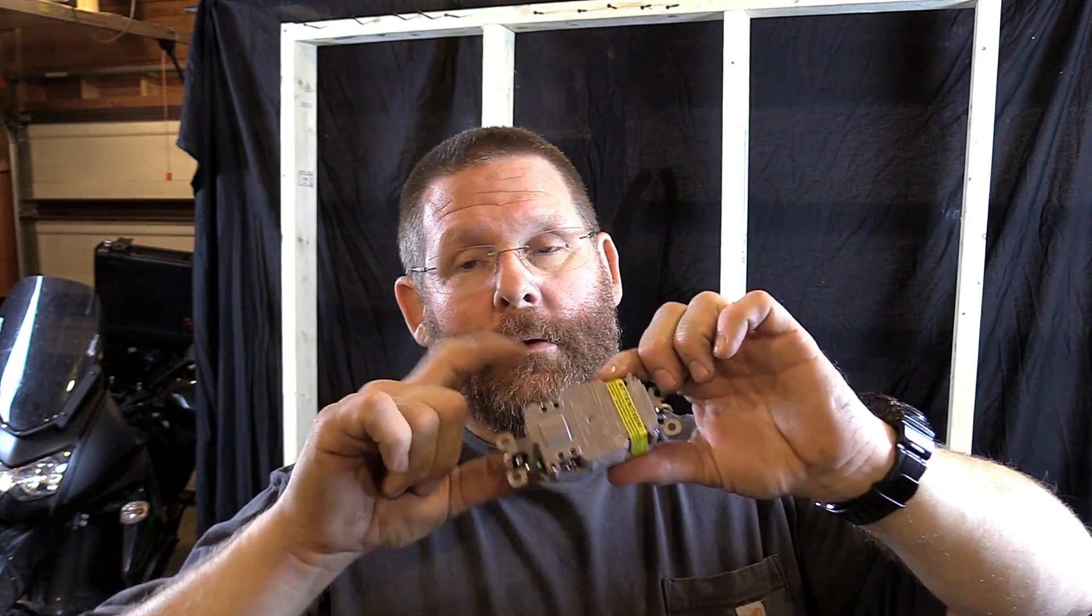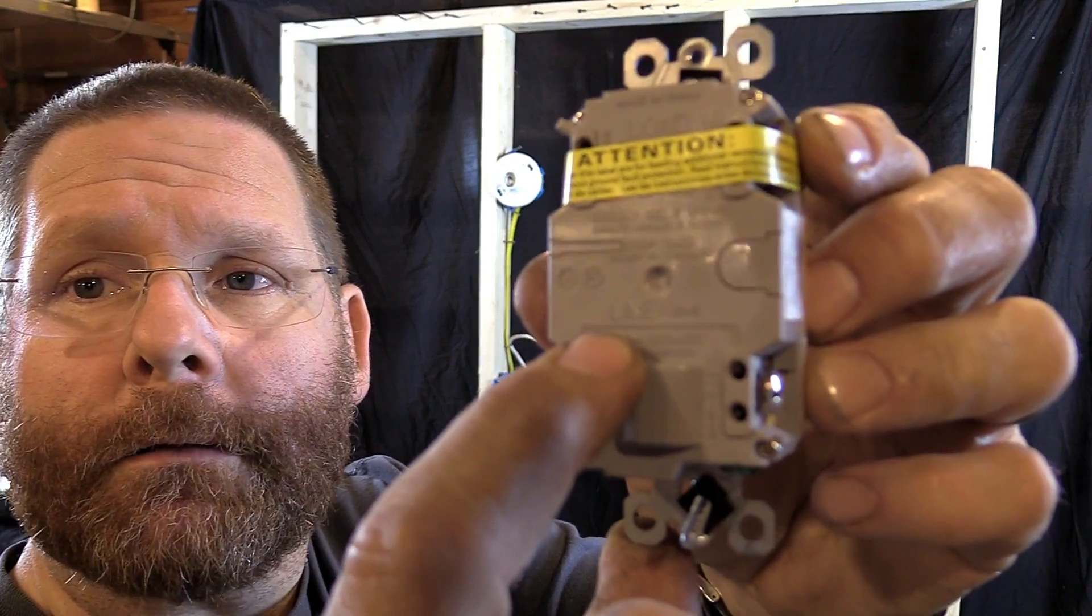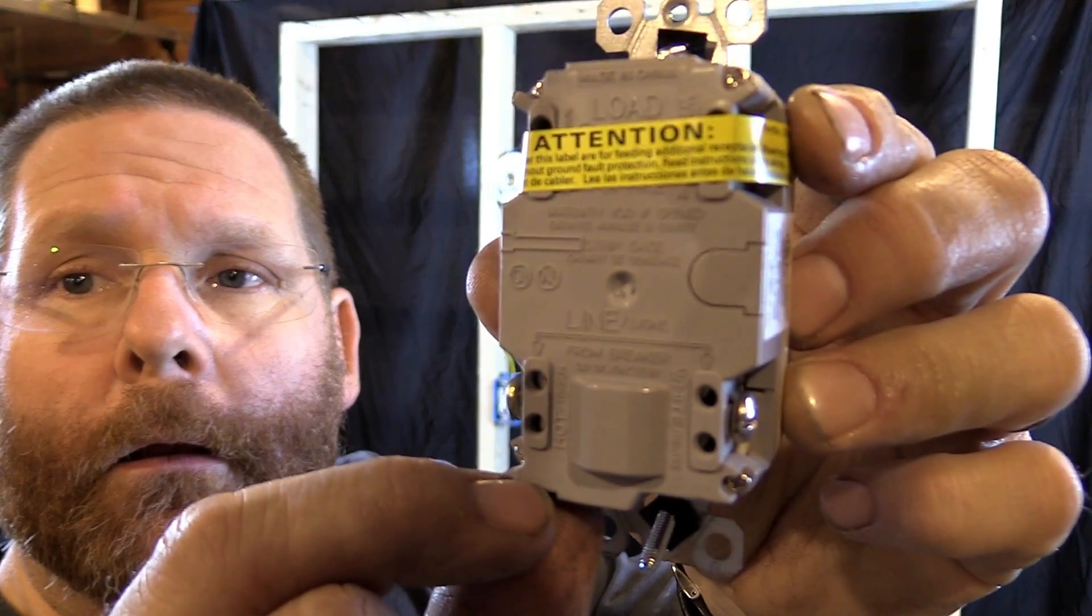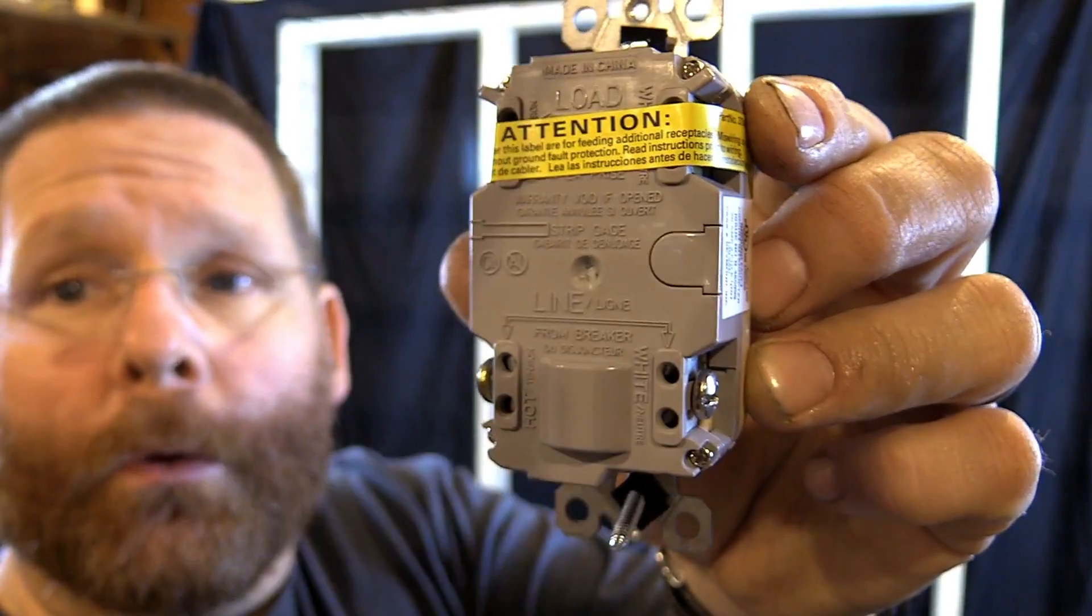When you get a receptacle brand new, there should always be a piece of tape around here. Now what that tells you is this is where you hook it up. If you look on the back, it also says line. And that one up top says load - line and load. And you see there's no tape on the line, right?